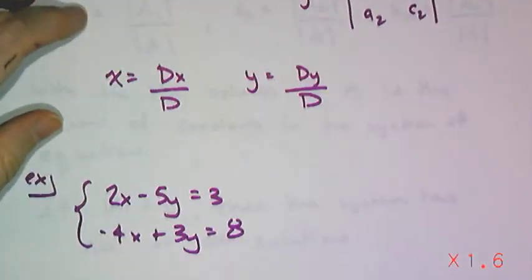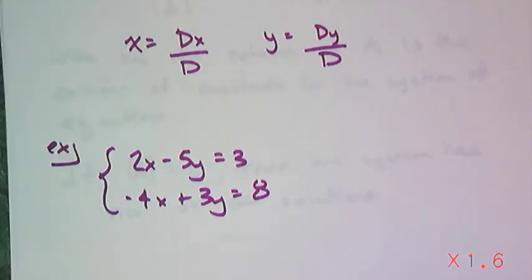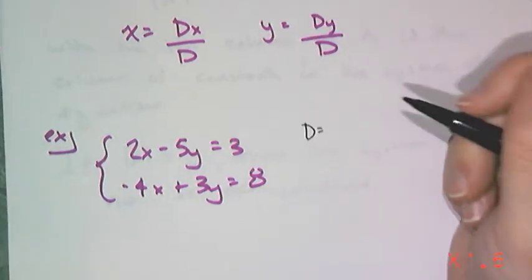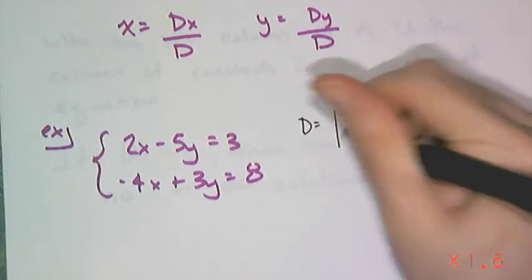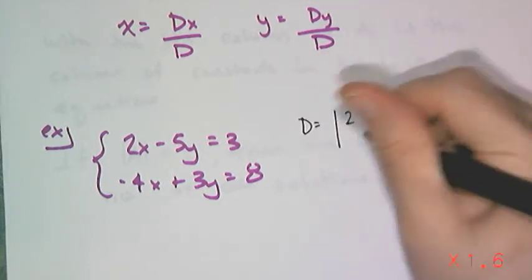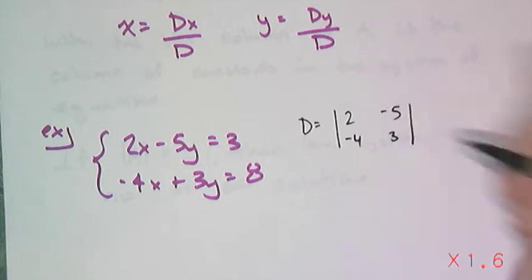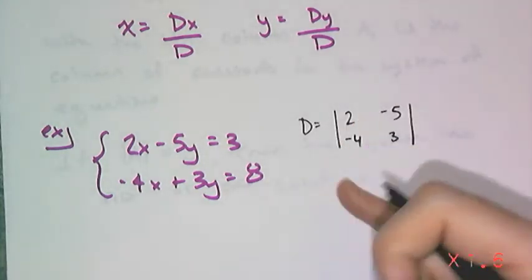So let's try that with this system here. Now I'm going to use my calculator to find those determinants, just because I have the calculator. So first, I need to find d, and that would be this here, 2, negative 5, negative 4, 3. So I'm going to find the determinant of the coefficient matrix.